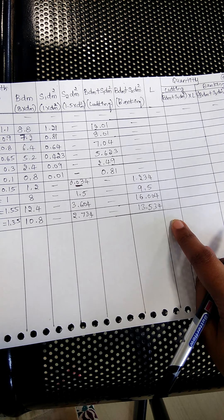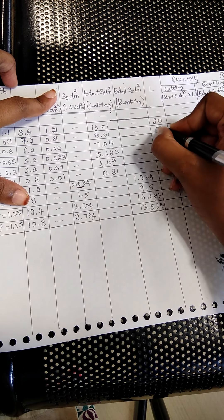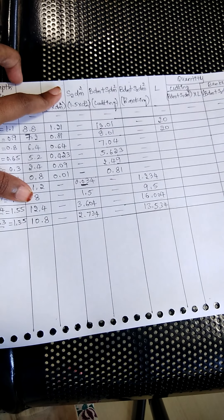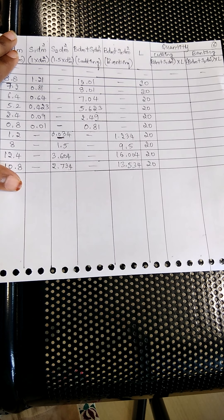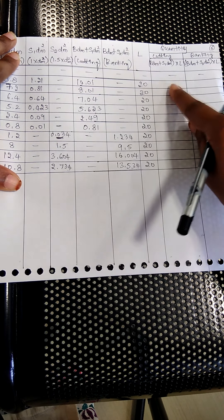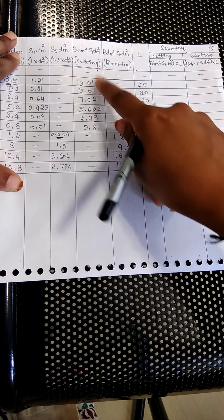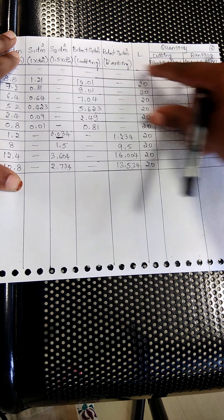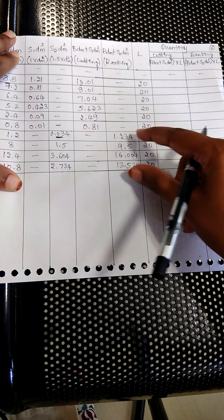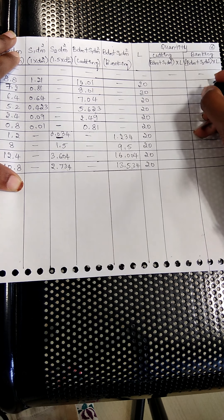The next column is the length. For this problem the interval is 20 meters, so for all rows the value is 20. Now I have to find the quantities — the quantity of cutting written separately and the quantity of banking separately. The first six readings come under cutting and the remaining four come under banking, so I put dash in the banking column for the first six rows.